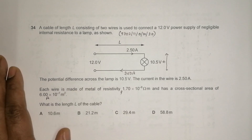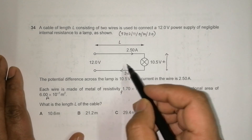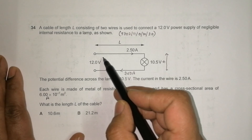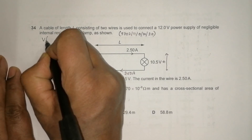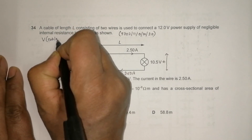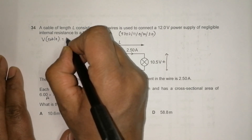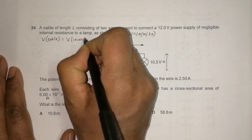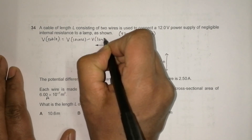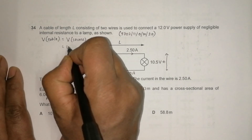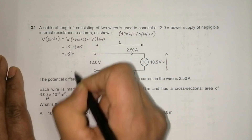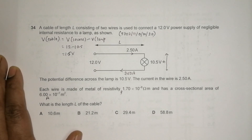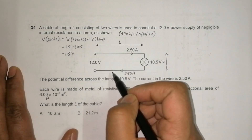We need to find the length l of the cable. First, we find the potential difference across the cable only. The voltage across the cable equals the voltage from the source minus the voltage across the lamp, which is 12 minus 10.5, equal to 1.5 volts.